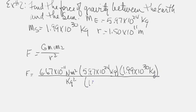Then the distance between the two of them from center to center, and we need to square that. Doing the arithmetic gives us the value of 3.52 times 10 to the 22nd newtons.